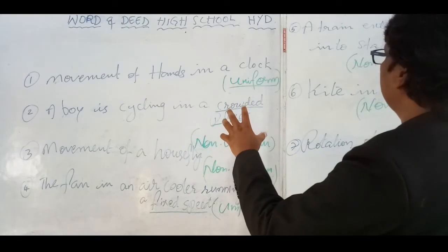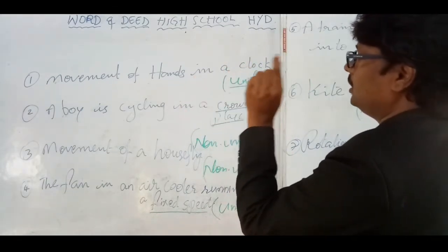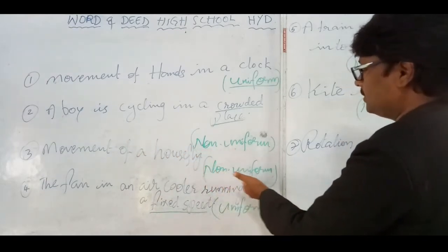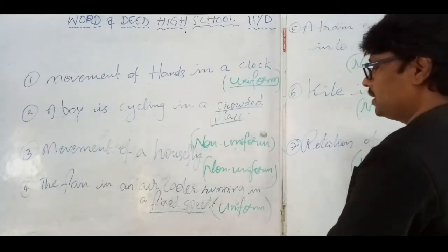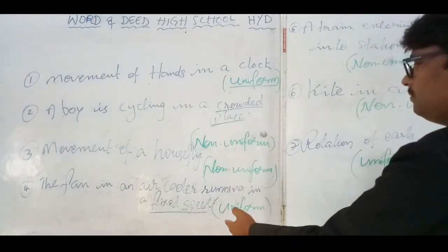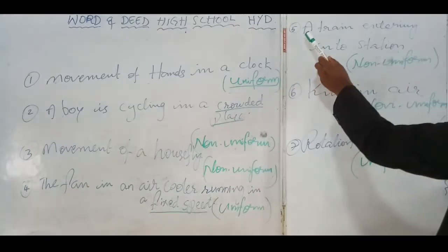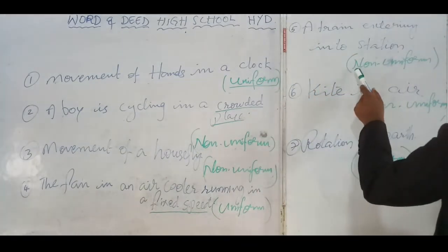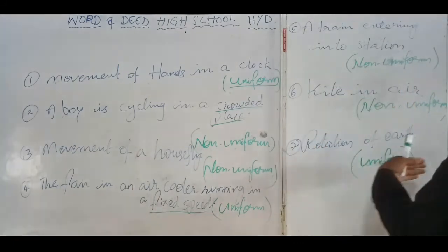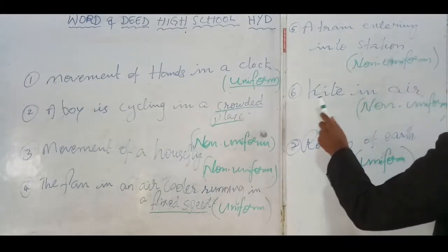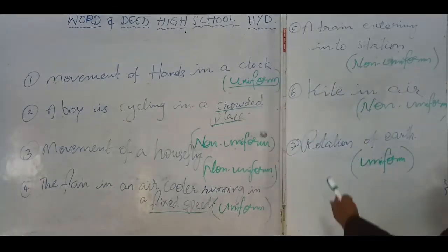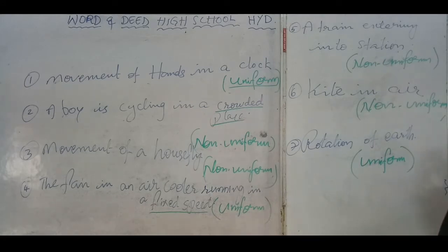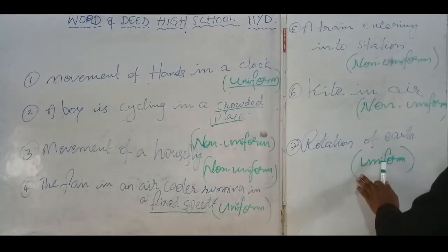So here is the summary: movement of hands in a clock — uniform motion. A boy cycling in a crowded place — non-uniform motion. Movement of a house fly — non-uniform motion. The fan in an air cooler running at a fixed speed — uniform motion. A train entering into a station — non-uniform motion, because the speed is going to reduce and it will finally stop. A kite in air — non-uniform motion, as it depends on the movement of the wind. And rotation of earth — uniform motion, as the days, nights, and seasons change in a fixed way.